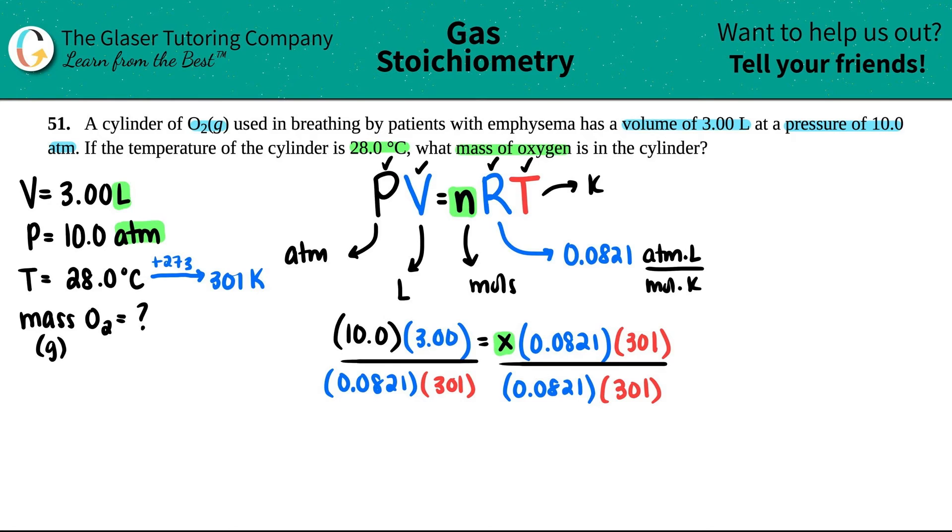And also, I don't want to do any unnecessary rounding in the middle of our formula, because I want to be as exact as possible. So I'm going to try to plug in this whole thing into my calculator at once. When we do this, the R value goes bye-bye, and the T value goes bye-bye. So I get 10 times 3, divided by 0.0821, divided again by 301.